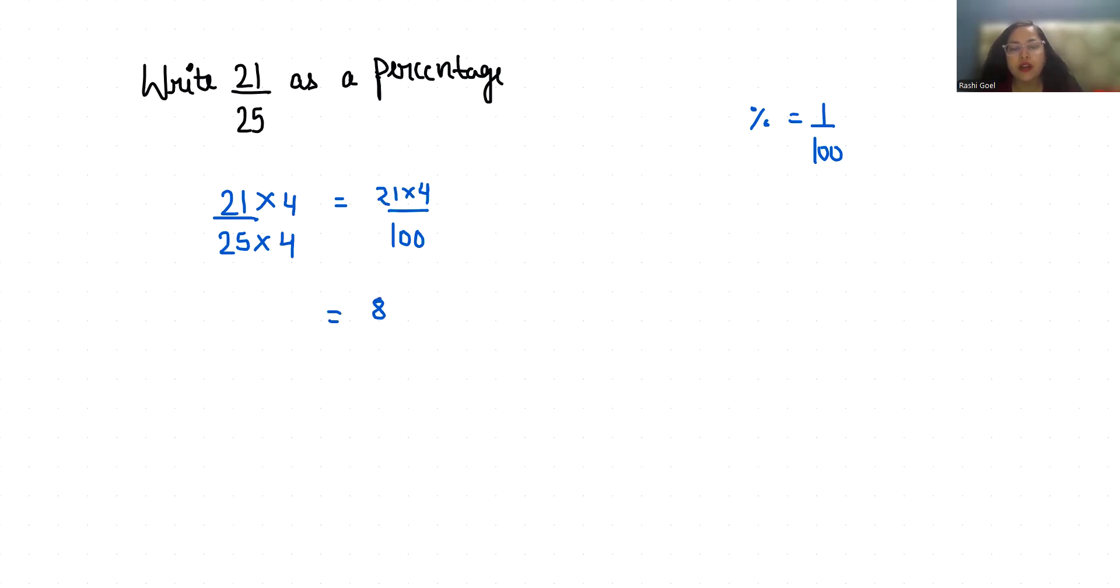84 by 100, I can write it as 84 times 1 by 100. Now I can replace this 1 by 100 with the percent sign. So it is 84%. So 21 by 25 in terms of percent is 84%.